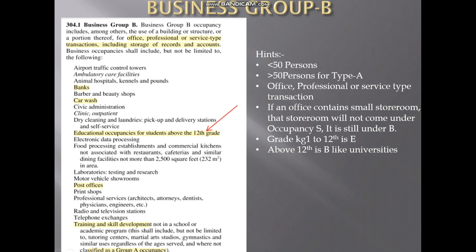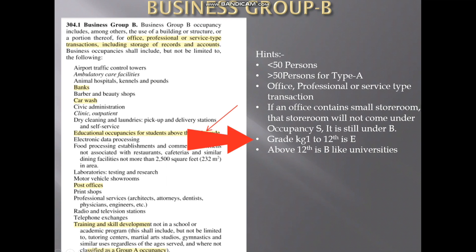An important point: educational occupancy is for students above the 12th grade. From KG1 to 12th standard, it comes under educational group. Above 12th standard — like colleges and universities — comes under occupancy type B, Business Group B.